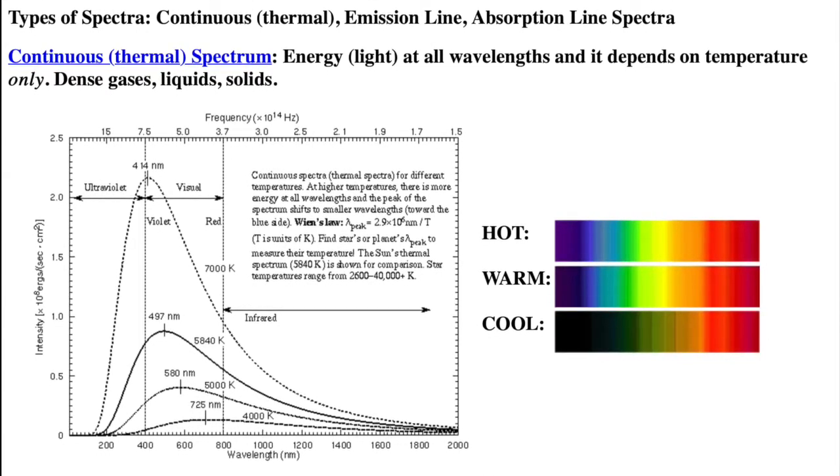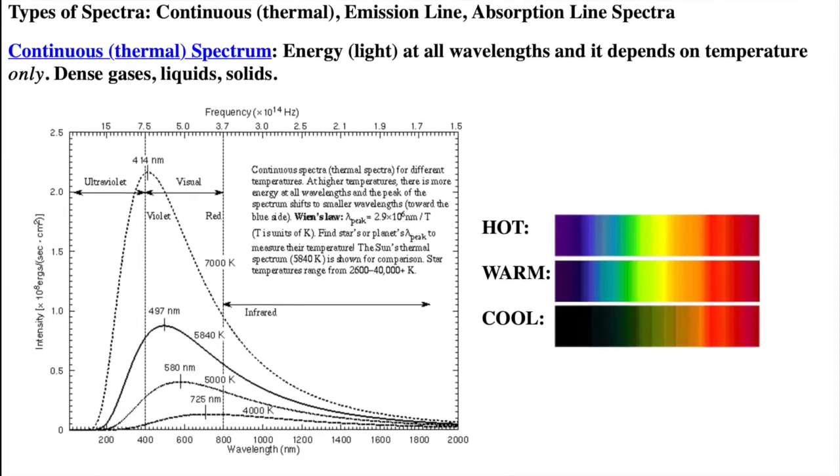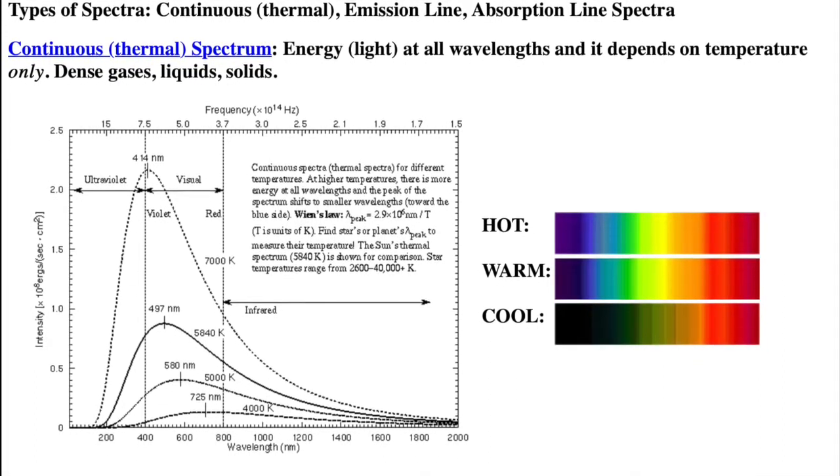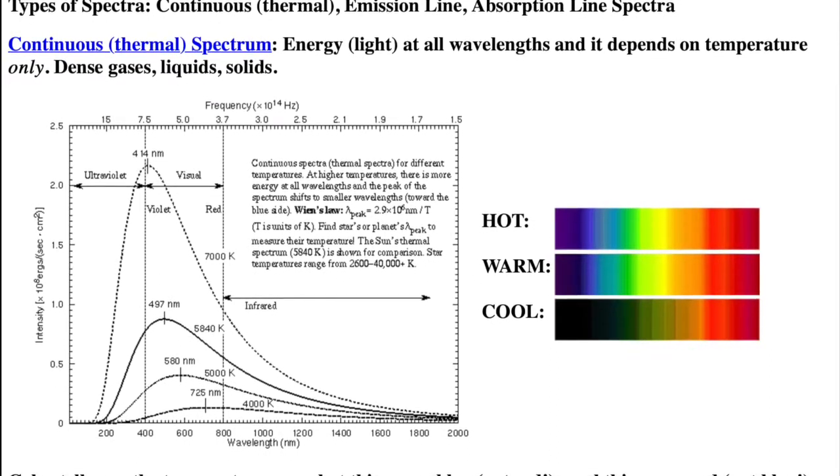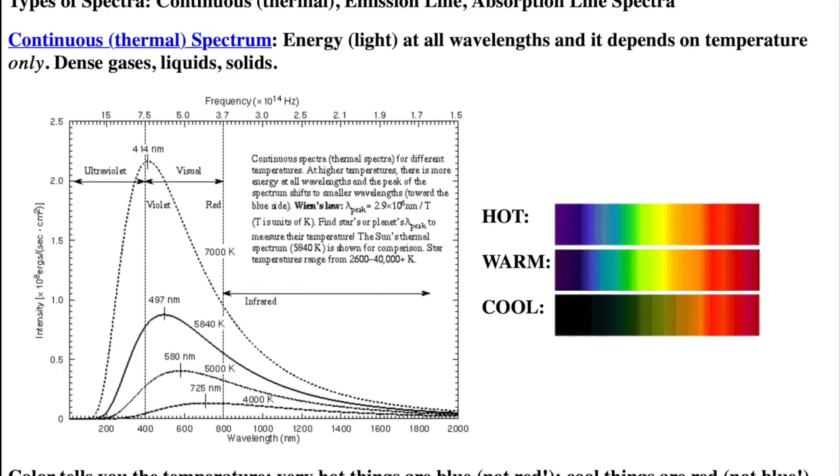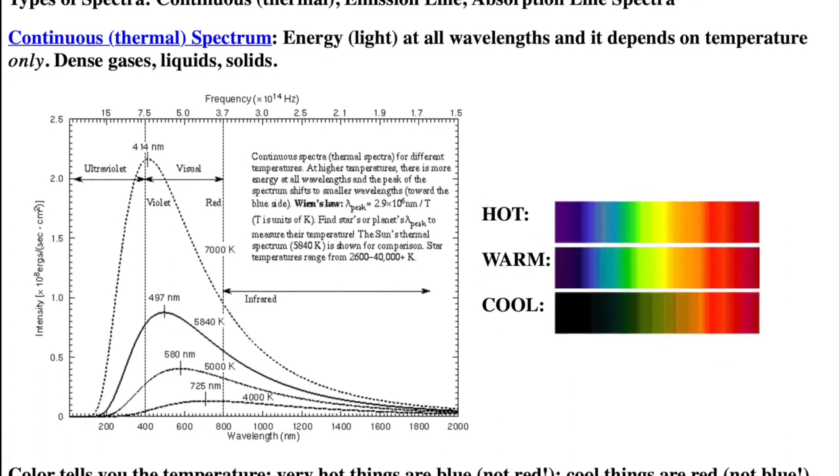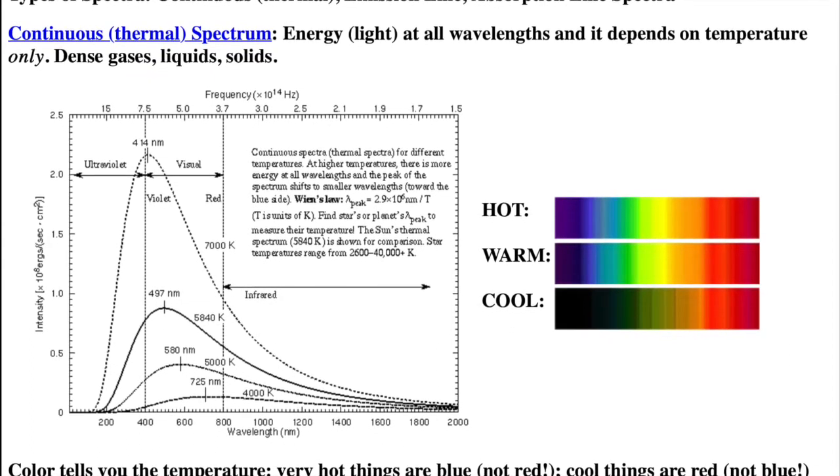A continuous or thermal spectrum depends on the temperature of the object only. It does not depend on the object's composition or density. A chunk of solid lead and a same-sized chunk of solid iron at the same temperature will have the same spectrum. You can't tell them apart.